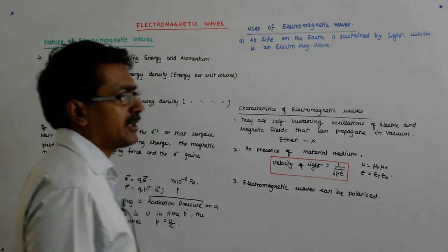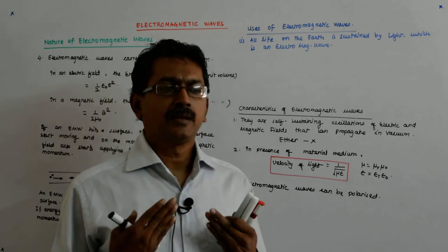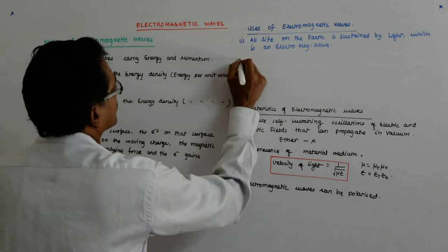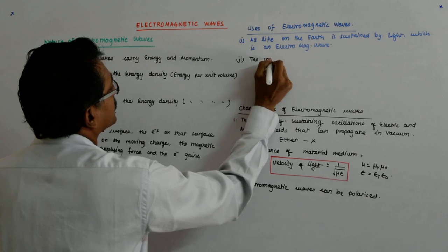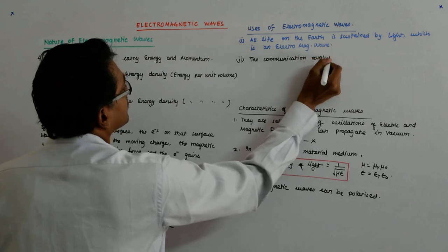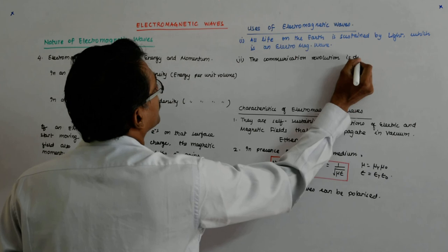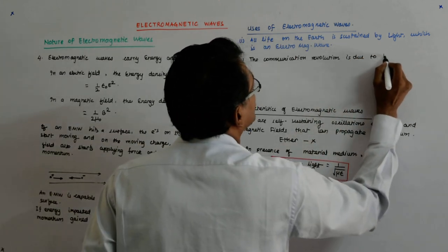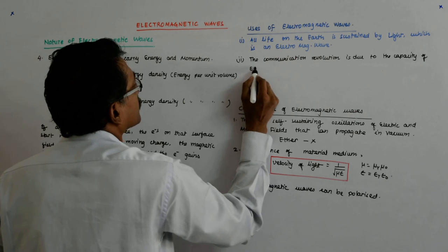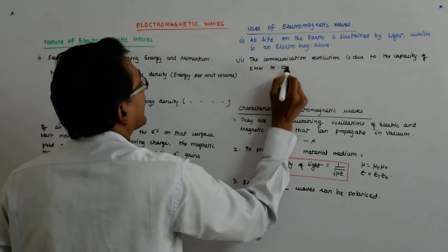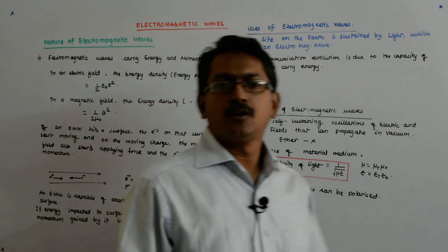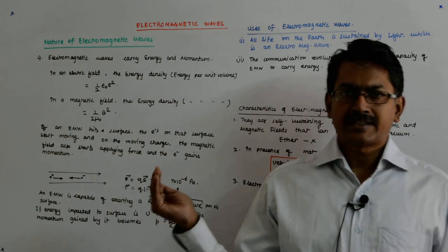Now, since it carries energy, what happens? We are able to propagate it across the world. So, the communication revolution is due to the capacity of electromagnetic waves to carry energy. Now, if it did not carry energy, how will it transfer that energy somewhere else? So, it carries energy.